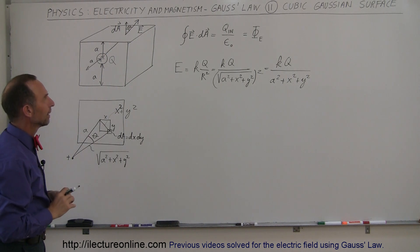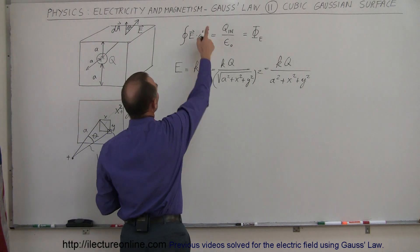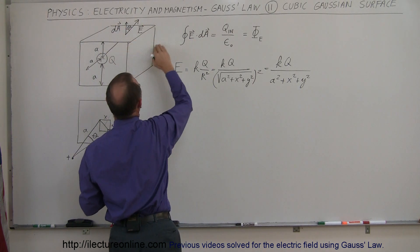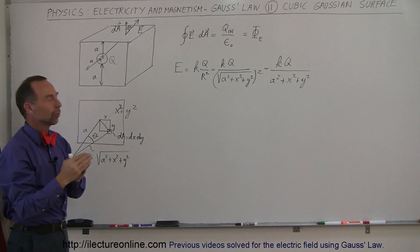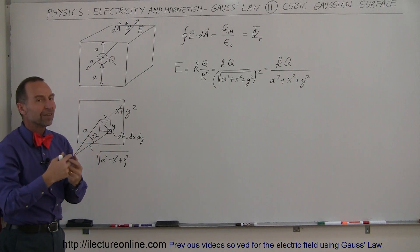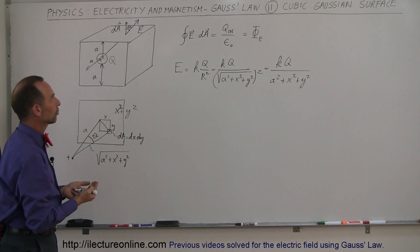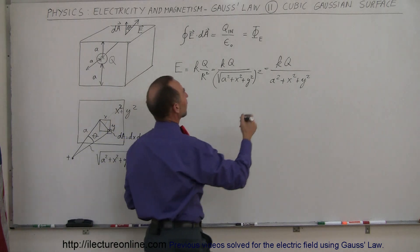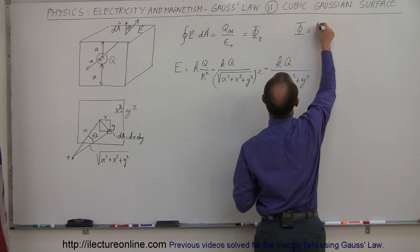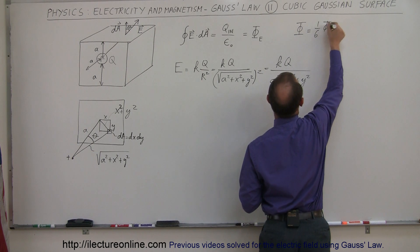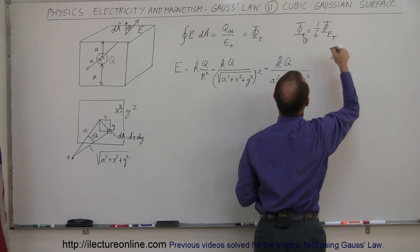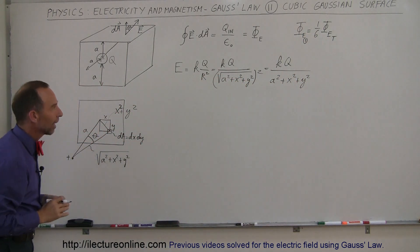Now, the integral of E dot dA gives you the electric flux through one side. Since there are six faces and each face is symmetrically the same distance from the central charge, each face carries one-sixth of the total electric flux. So the electric flux through one face equals one-sixth of the total electric flux emanating from the charge.